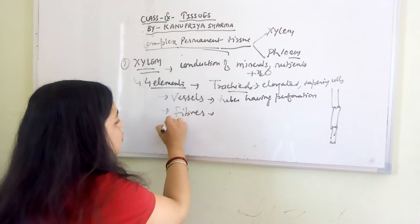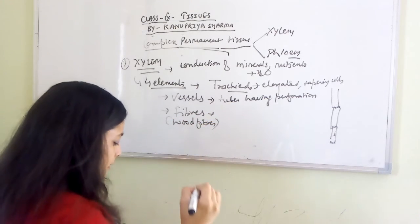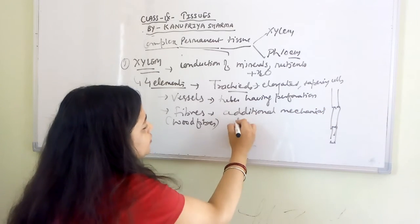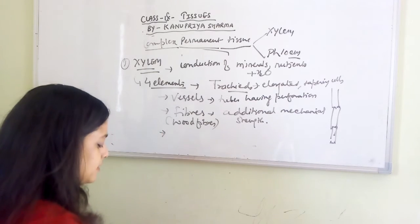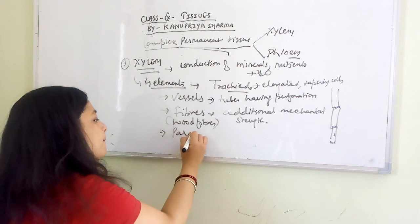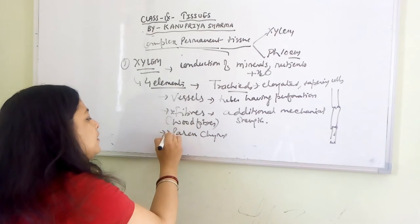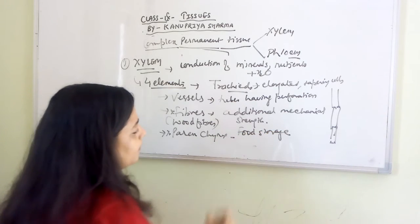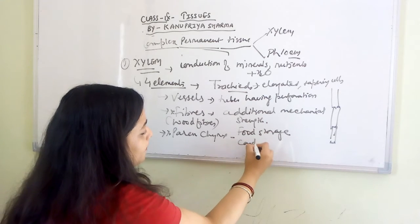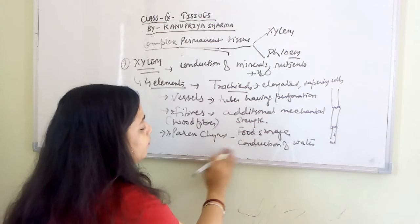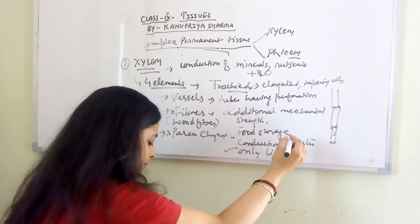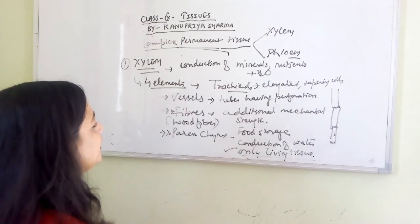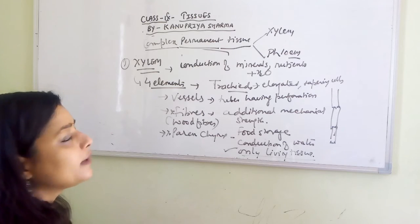The third element is xylem fibers, also known as wood fibers, which provide additional mechanical strength. The fourth element is xylem parenchyma, which has a role in storing food but also helps in the conduction of water. An important point: xylem parenchyma is the only living tissue among all the elements in xylem.